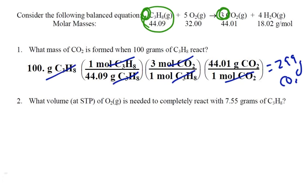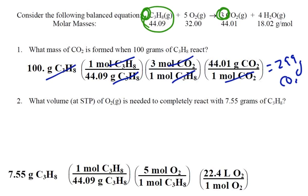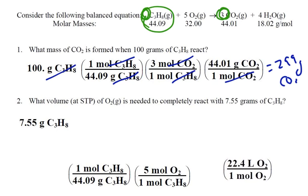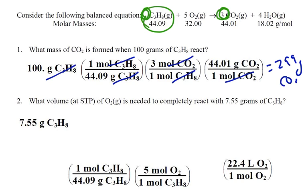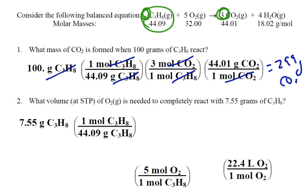Now the same thing can happen with this next problem, and we can see that our given is 7.55 grams of propane, and we're trying to go this time to the volume at STP, so that means we're going to be using their 22.4 conversion factor in here. Since we start with grams, we're going to use molar mass, grams per mole, and again the 44.09 because it's propane.